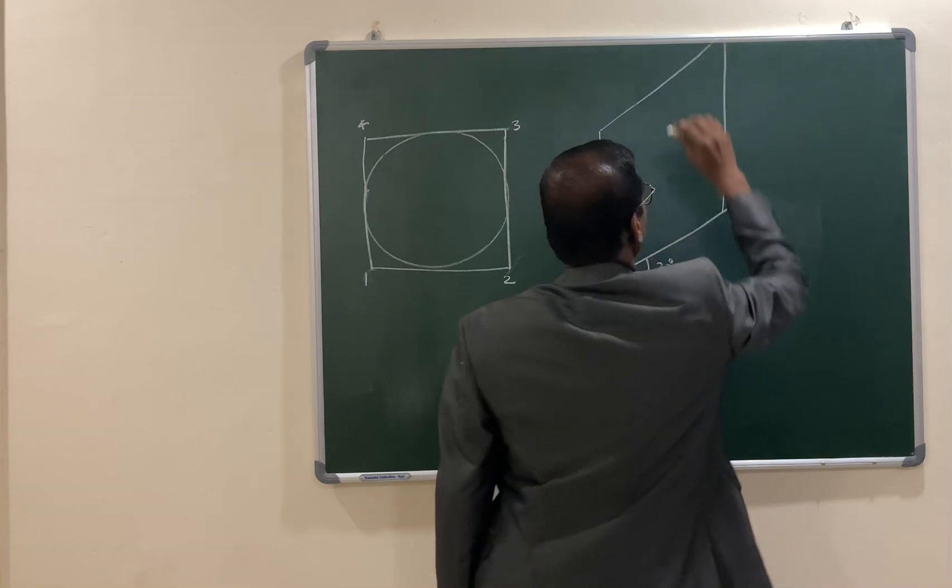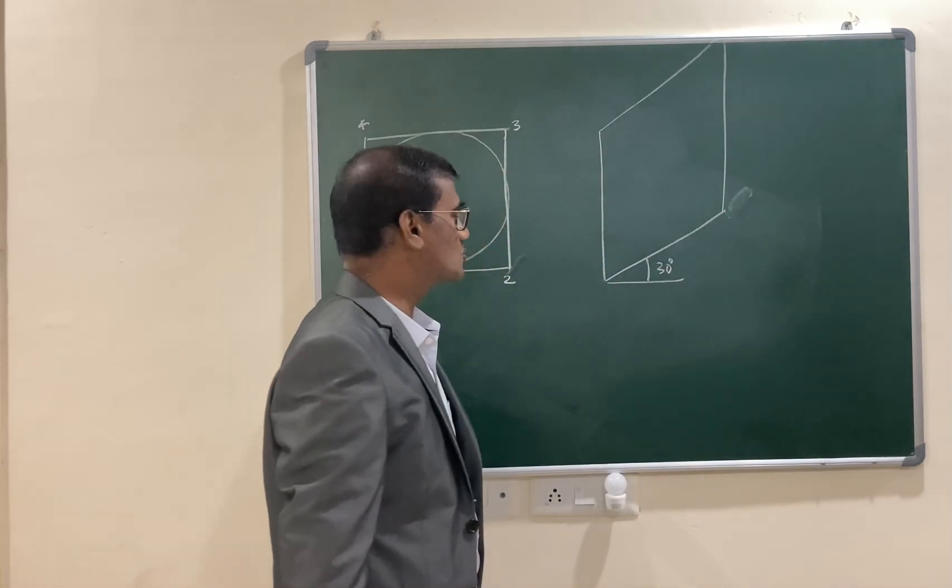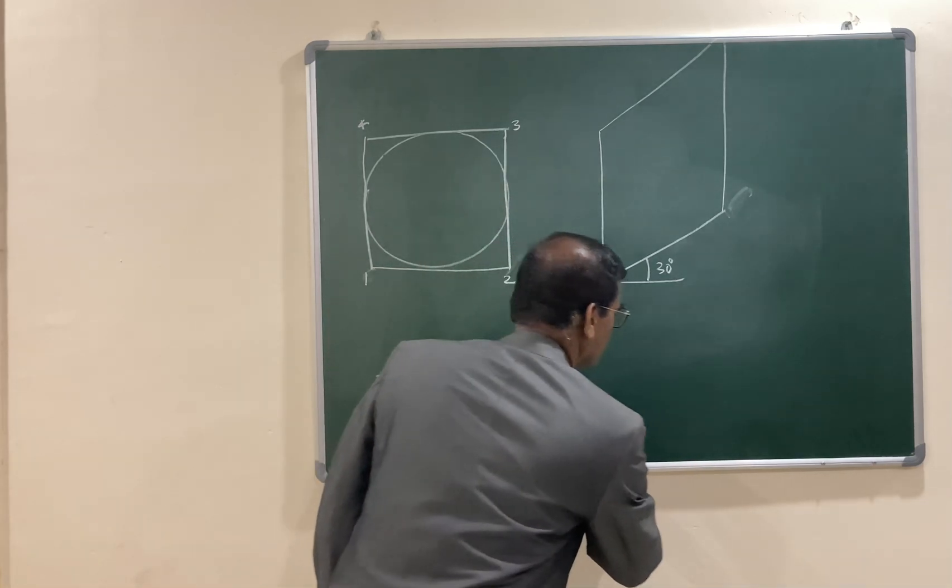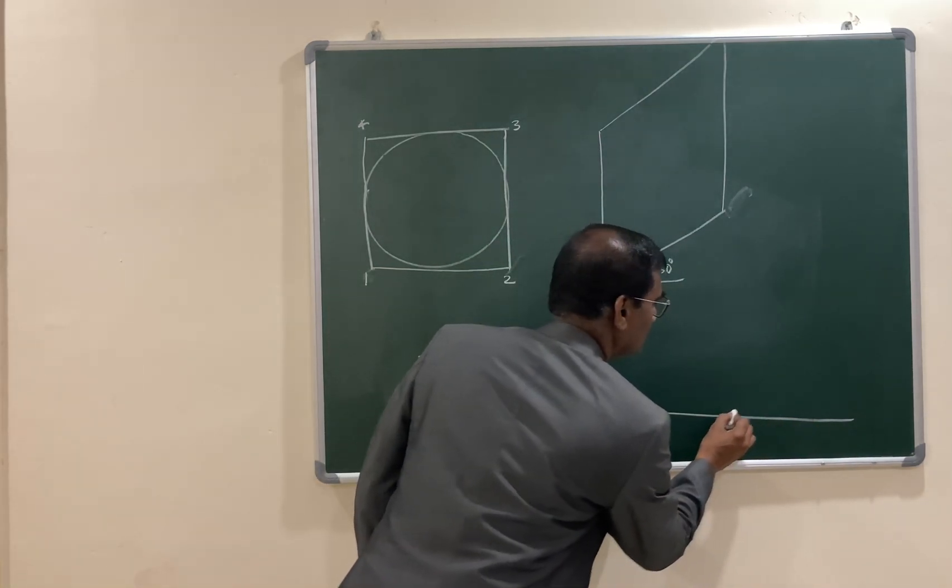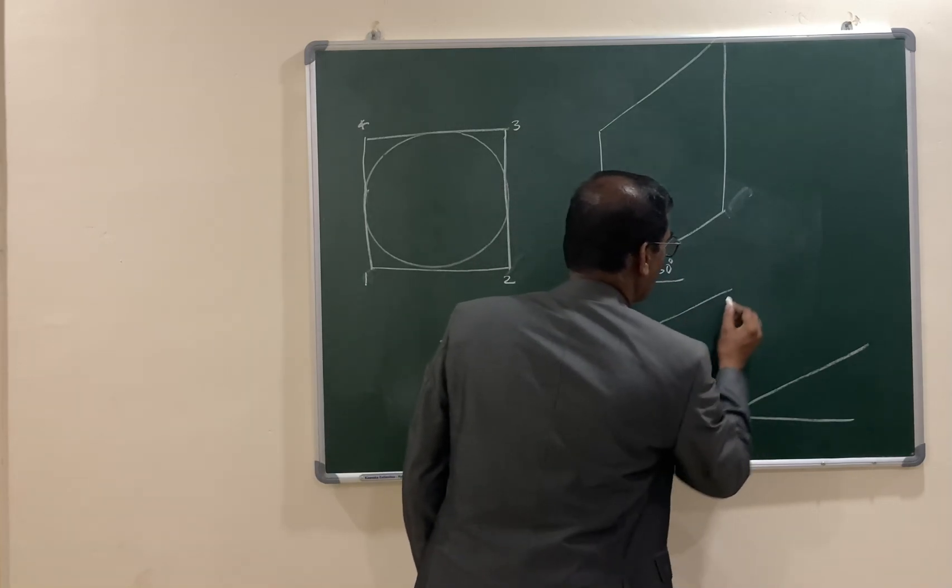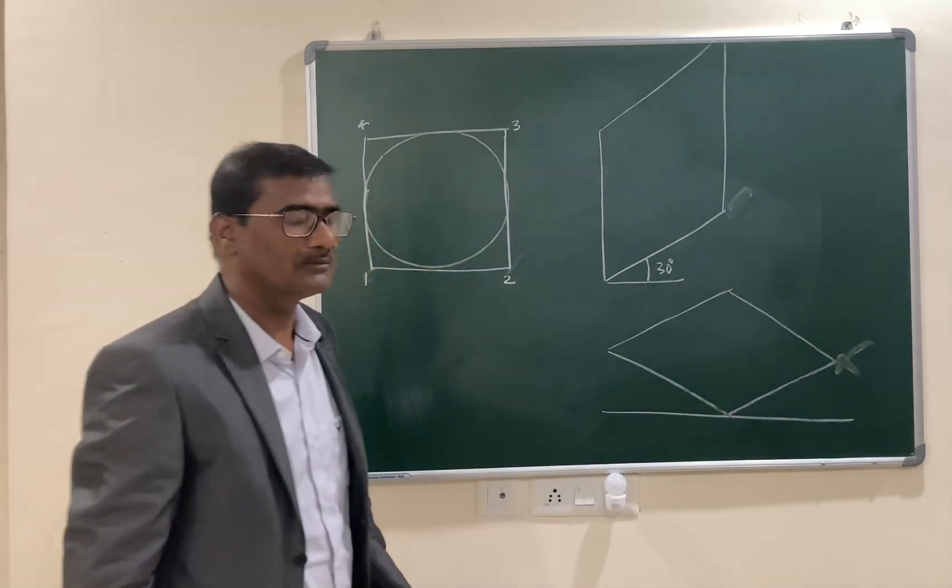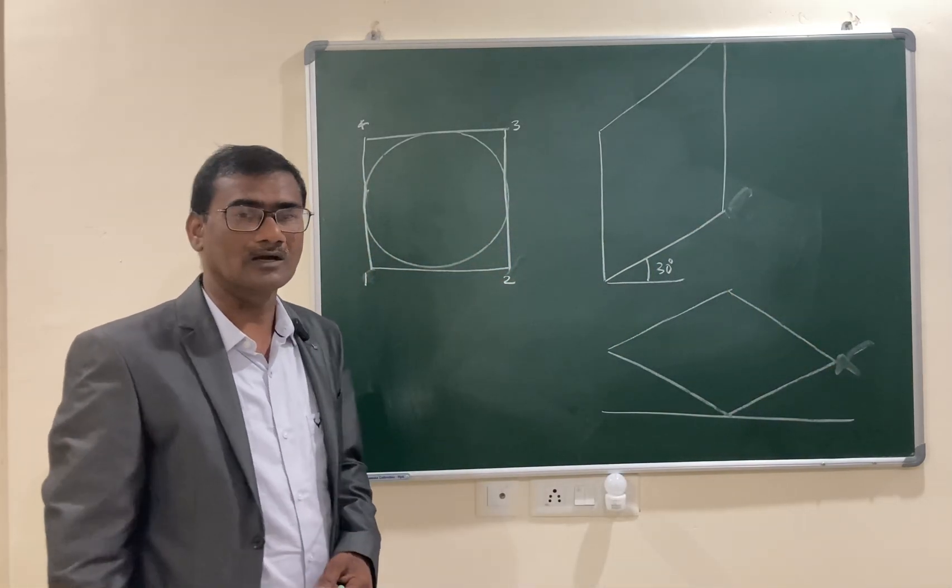Similarly in top view, let us draw a horizontal line and both lines are equally inclined, that is 30 and 30 degrees, and complete the parallelogram. Now after completing this, you can observe carefully the parallelogram has a shorter diagonal and longer diagonal.